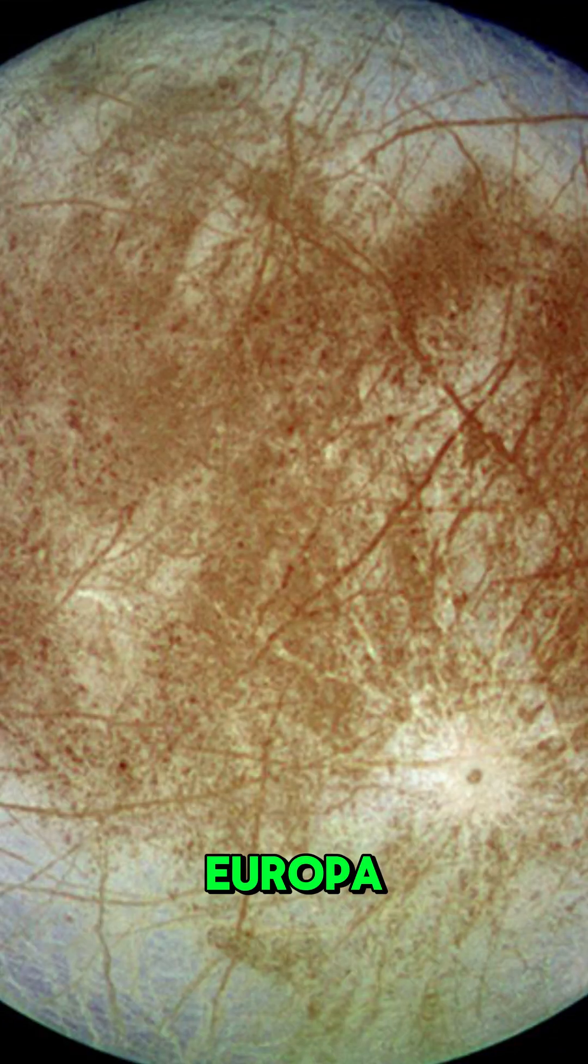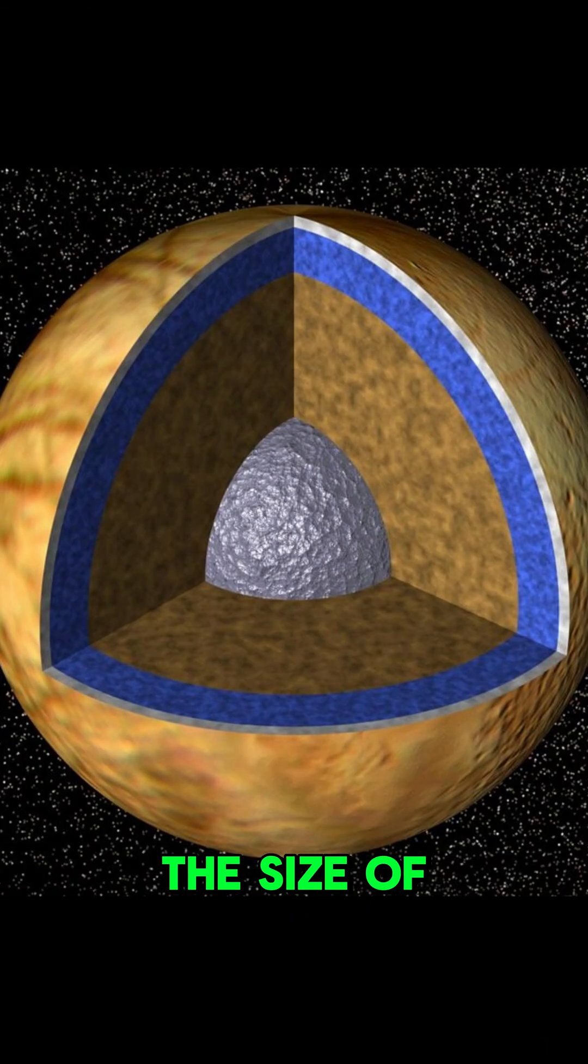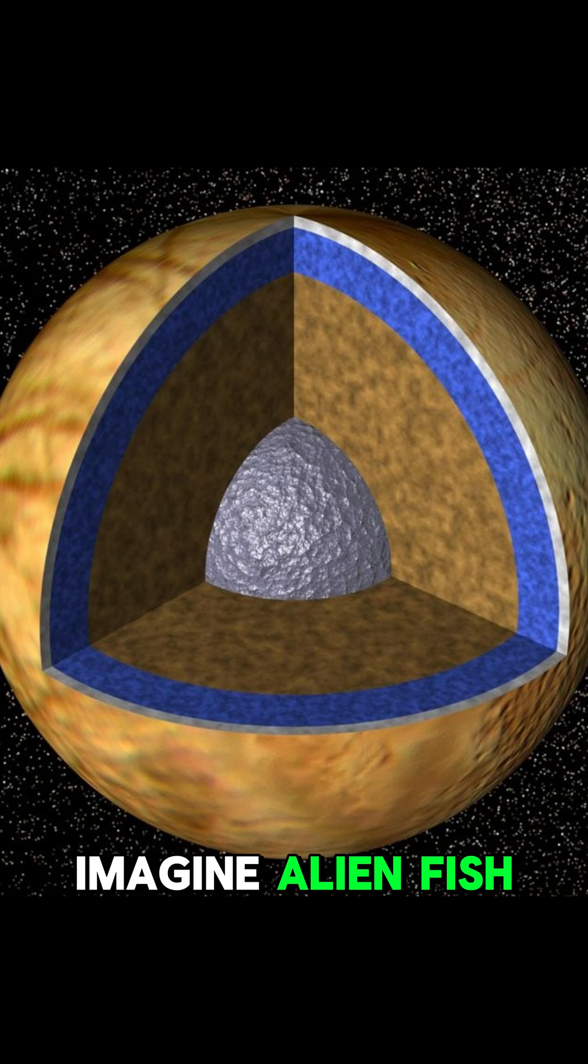First stop Europa. A frozen world with a liquid ocean, possibly twice the size of Earth's, hidden beneath miles of ice. Imagine alien fish swimming in the dark.